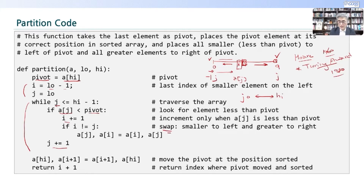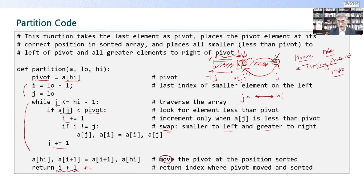여기 swap이구요. 때때로 swap이 일어납니다. 그러면서 왼쪽 구간은 pivot보다 작은 값으로 채워지고, 오른쪽 구간은 pivot보다 큰 값으로 채워집니다. 맨 나중에 pivot을 이쪽으로 옮기는 것이죠. Pivot이 제 위치를 찾아가도록 합니다. 맨 마지막에는 i plus 1을 return해 주는 것이죠. 이것은 'move the pivot to the sorted position'입니다. Partition이 끝난 후 pivot value만 제 위치가 아니므로 pivot을 자기 위치로 옮기는 작업이 여기서 일어납니다.